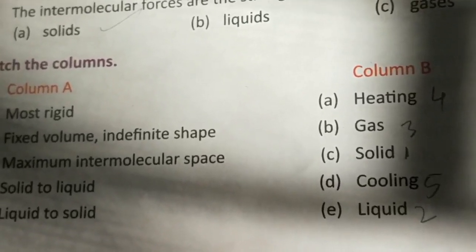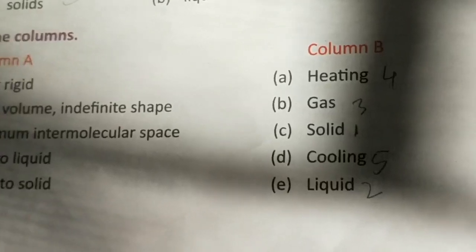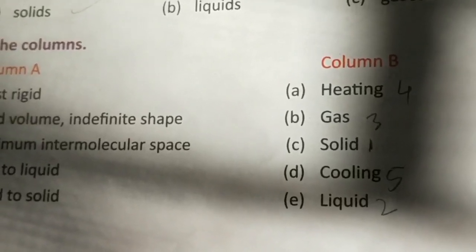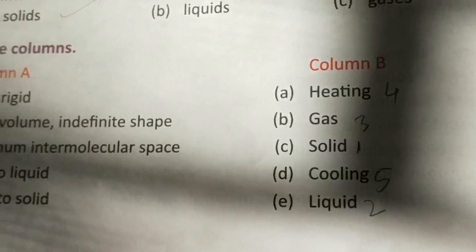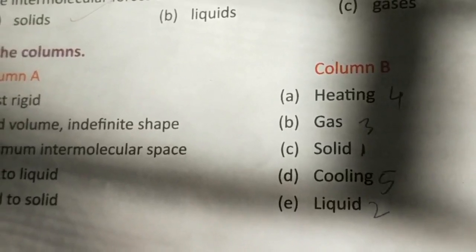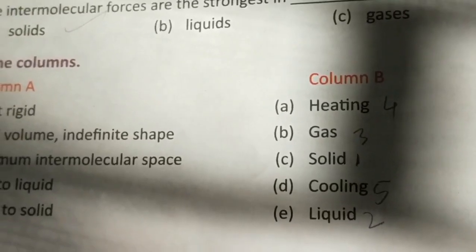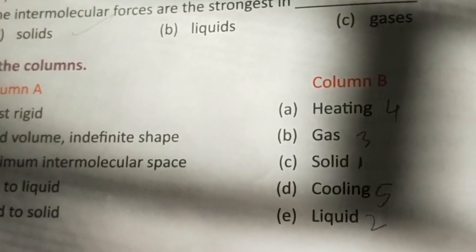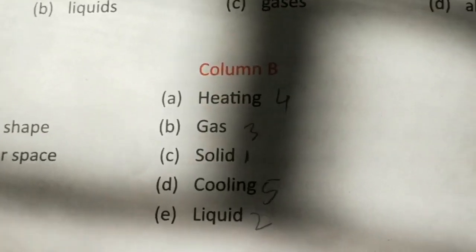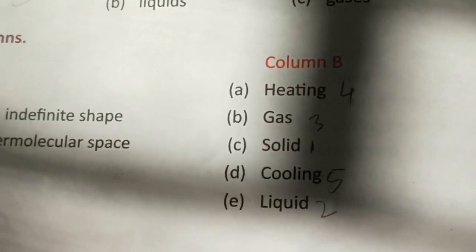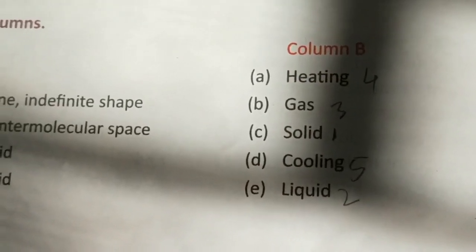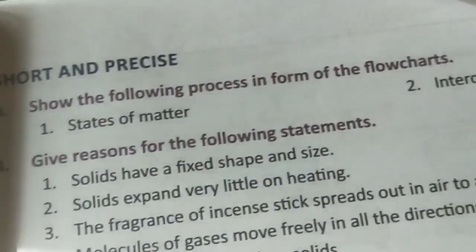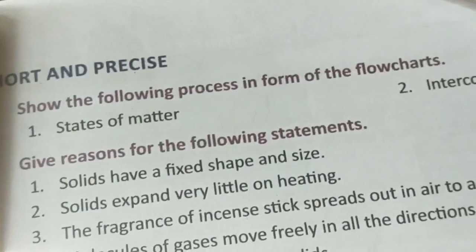So the matching answers are: one — C, solid; two — E, liquid; three — B, gas; four — A, heating; five — D, cooling. You have to do the matching this way with no cross matching.